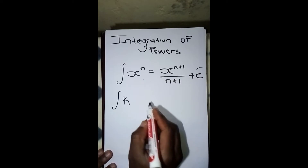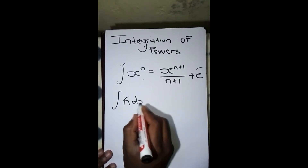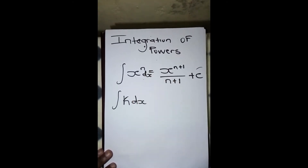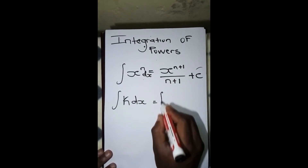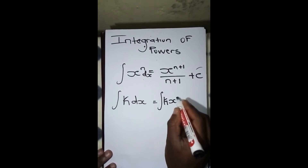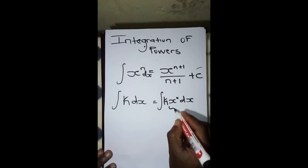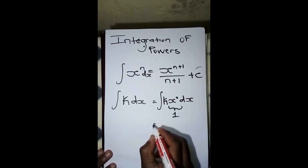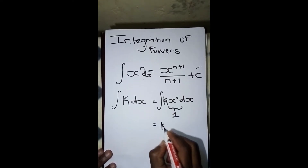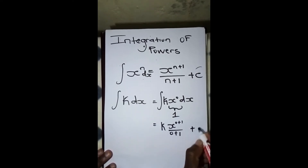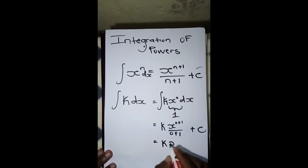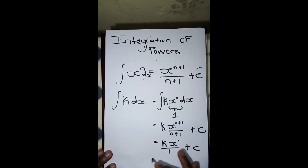For the constant: if we're given k dx, we can write this as k times x to the power 0 dx, since x to the power 0 is simply 1. If we integrate this, it becomes k times x to the power 0 plus 1 over 0 plus 1, plus C. This simplifies to k times x to the power 1 over 1, plus C, which is just kx plus C.